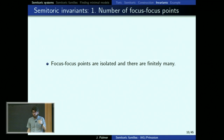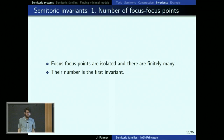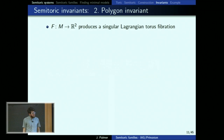I'll go through the five invariants to get some intuition about how they're constructed. The first is the number of focus-focus points invariant, which is simply the number of focus-focus points. They're isolated, and in fact there are finitely many even if your manifold isn't compact. So this is an invariant — the easy one.